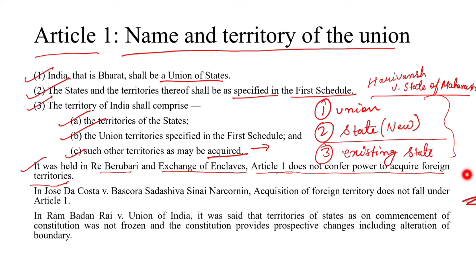Acquisition of foreign territory is governed by international law. This was held in Jose Acosta Beskora Sadasiva Siani Nairkonin — that acquisition of foreign territory does not fall under Article 1; rather, it is a matter of international law.